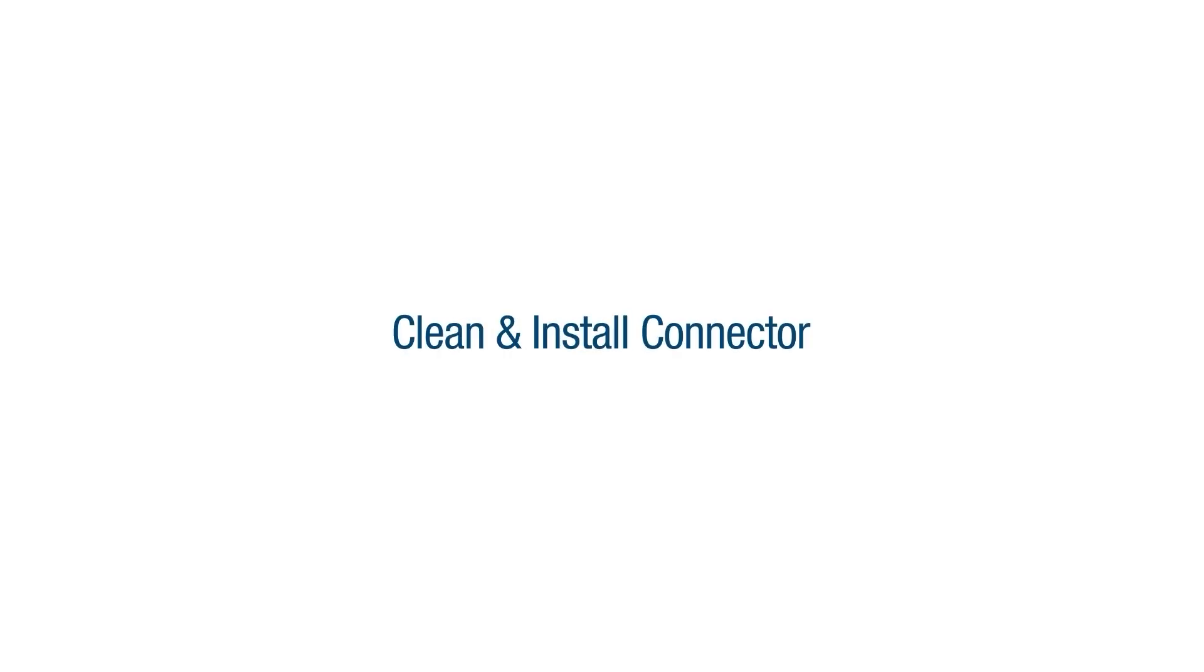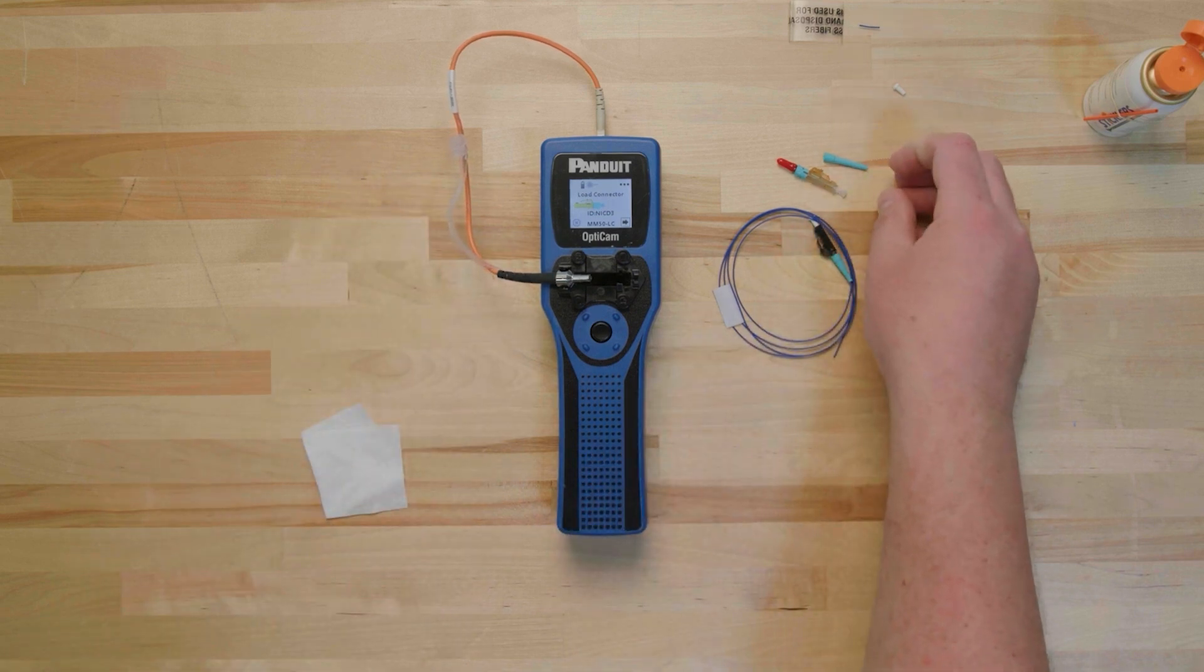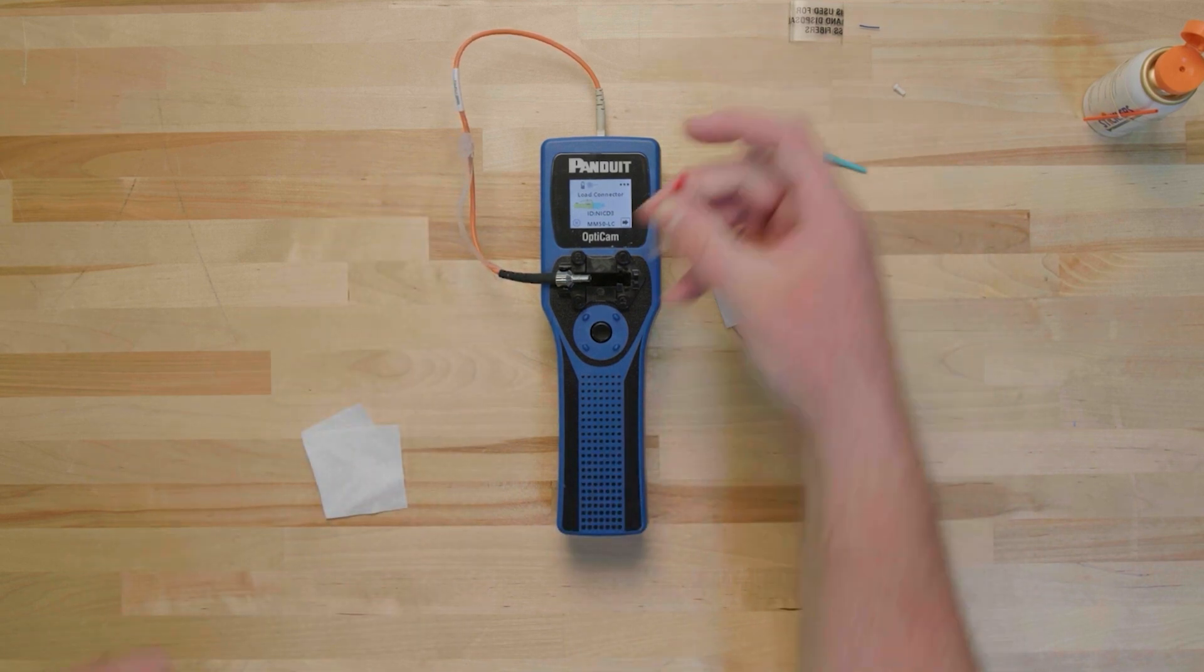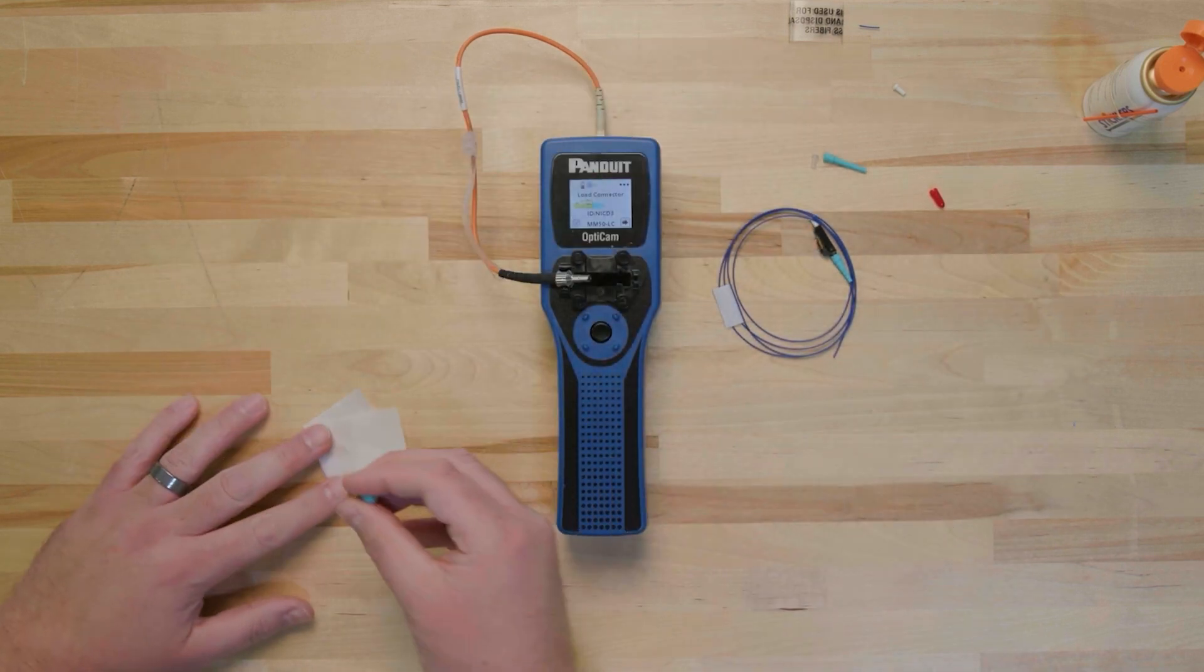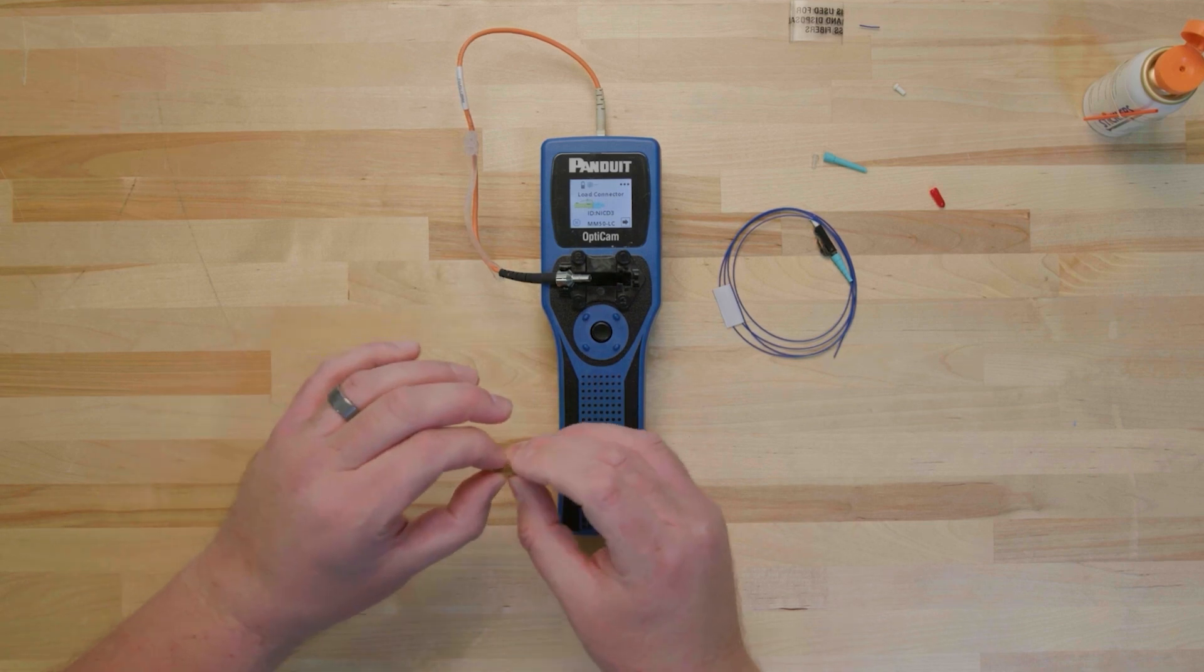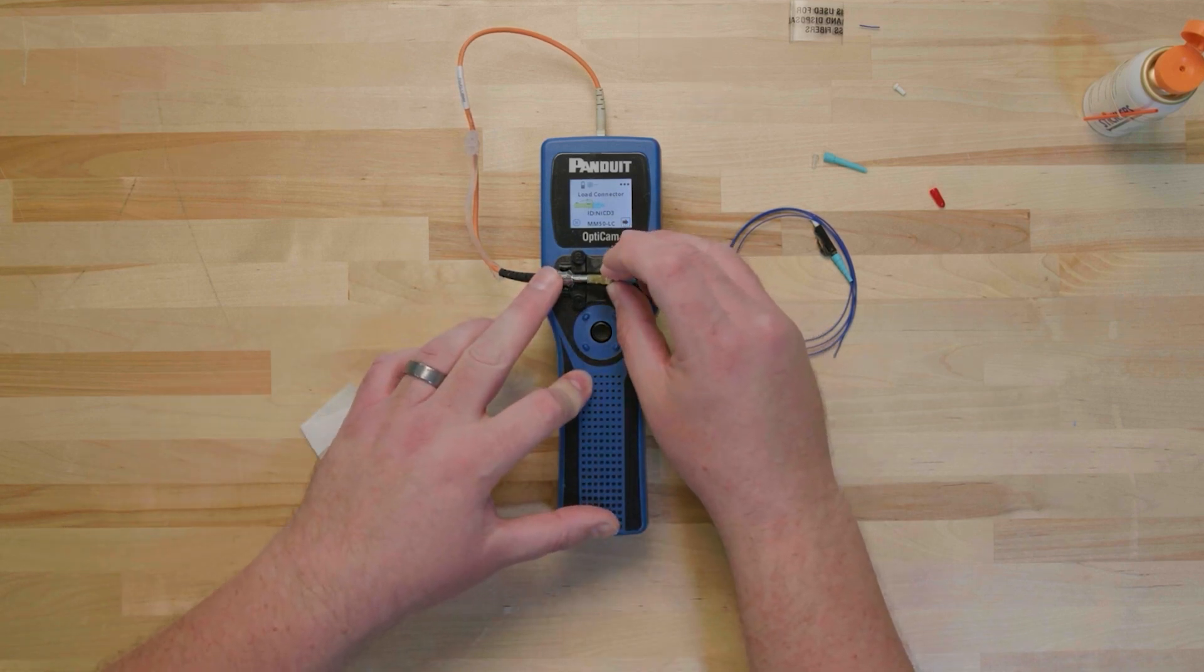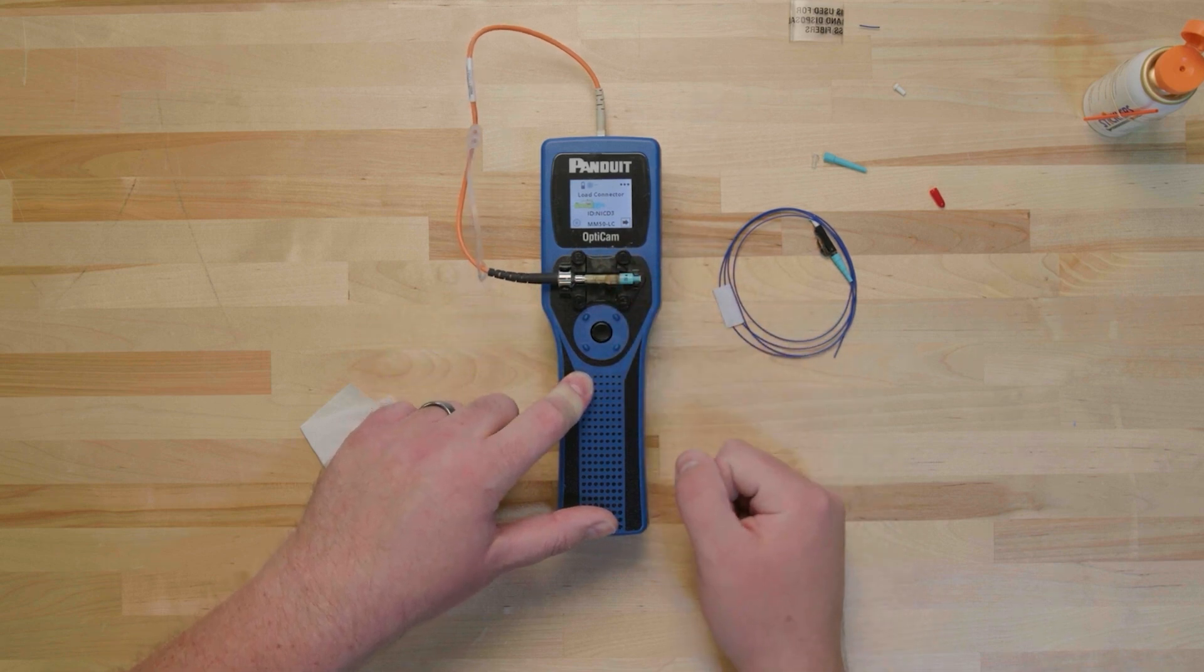Next, we'll clean and install the connector. It's important to clean the connector, even if it's in a factory sealed package, as it could still be contaminated. To clean the connector, remove the dust cap from the connector ferrule. Clean the ferrule end face with an approved wipe and cleaning solution by dragging it across the wipe from the wet portion to the dry portion of the cloth. Insert the ferrule end of the connector into the adapter and snap the connector into the cradle.